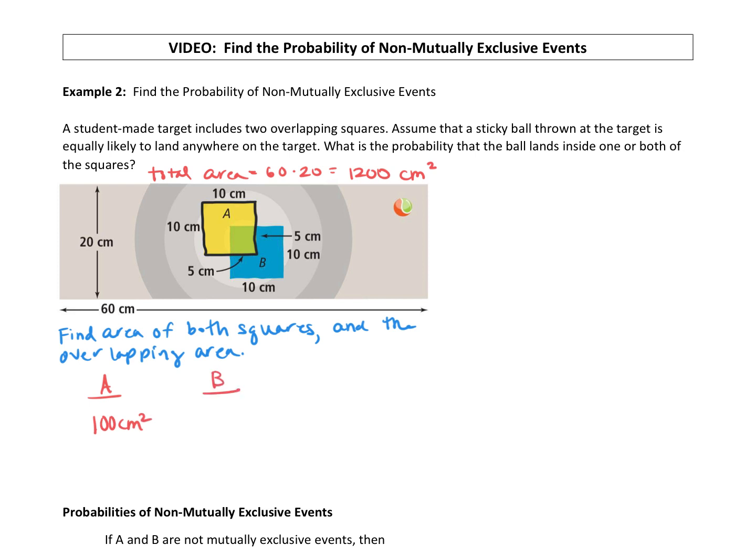Square B is this square over here. The whole thing is 10 by 10, so we have another 100 centimeters squared. And then the overlap - they gave us some dimensions. This 5 centimeters is pointing to this part. We have another square, 5 by 5. So the area of the overlap, 5 times 5, is 25 centimeters squared.